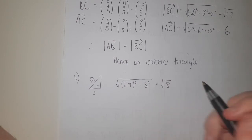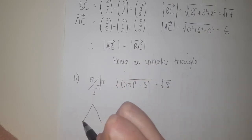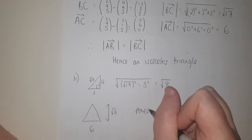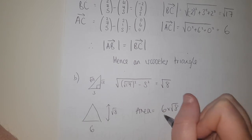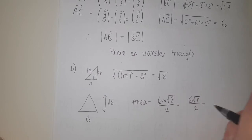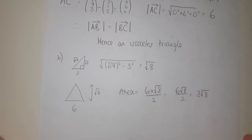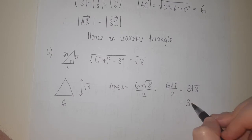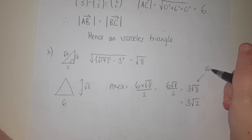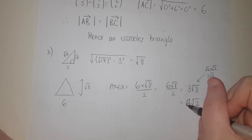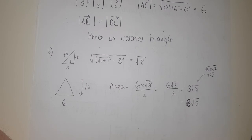So the height of the triangle is √8 and the full base AC is 6. Area = ½ × base × height = ½ × 6 × √8 = 3√8. Simplifying: √8 = √(4×2) = 2√2, so 3 × 2√2 = 6√2. That's the area.